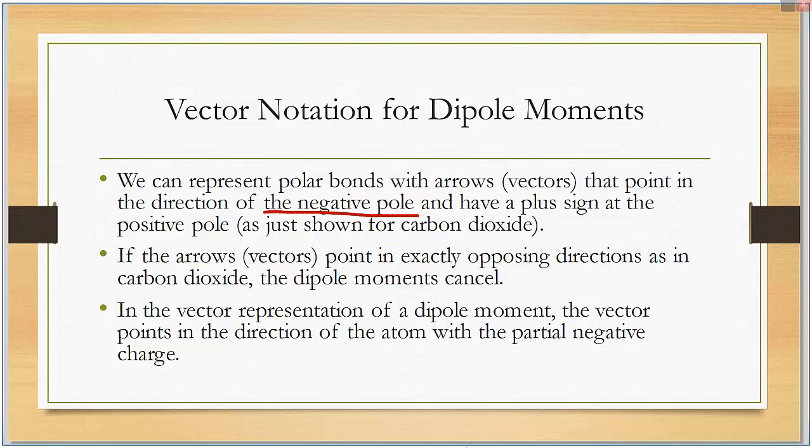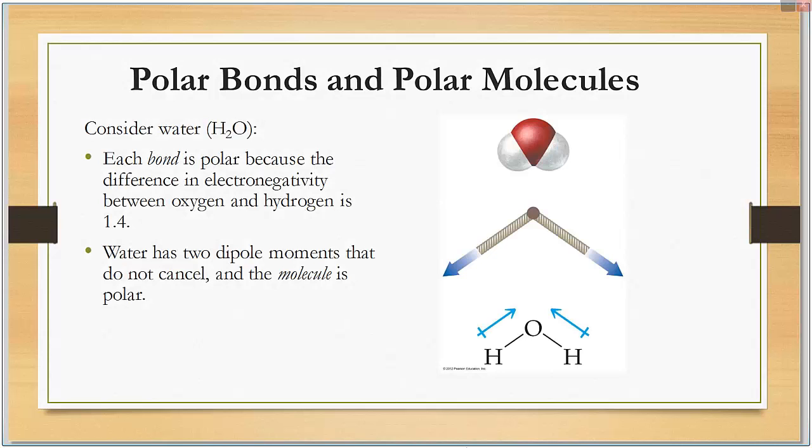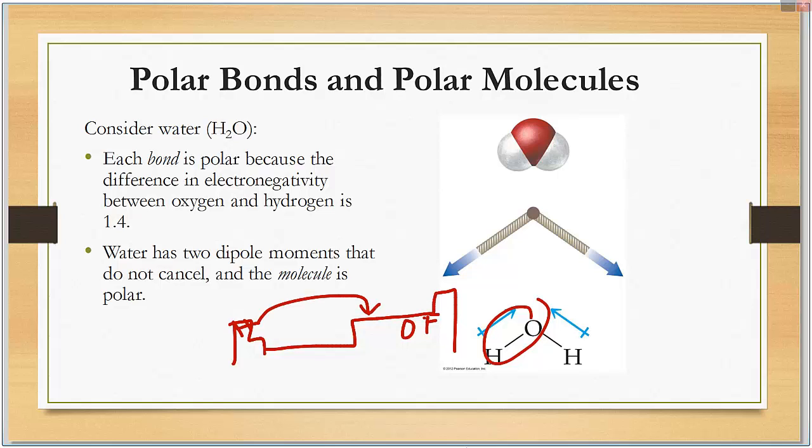Let's take a look at water. It also only has two bonds, oxygen and hydrogen. Once again, if we look at the periodic table, oxygen is fairly close to fluorine. Hydrogen is over here. The electronegativity difference is 1.4. Therefore it's still considered a polar bond. Oxygen is more electronegative than hydrogen. Water has two dipole moments, but they do not cancel out.